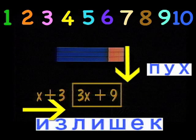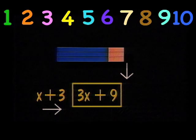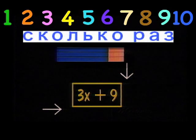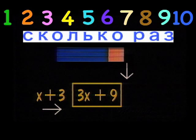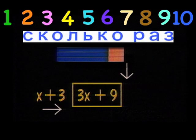This notation, x plus 3 over 3x plus 9 rectangle, asks the question: How many times can x plus 3 be counted from 3x plus 9?